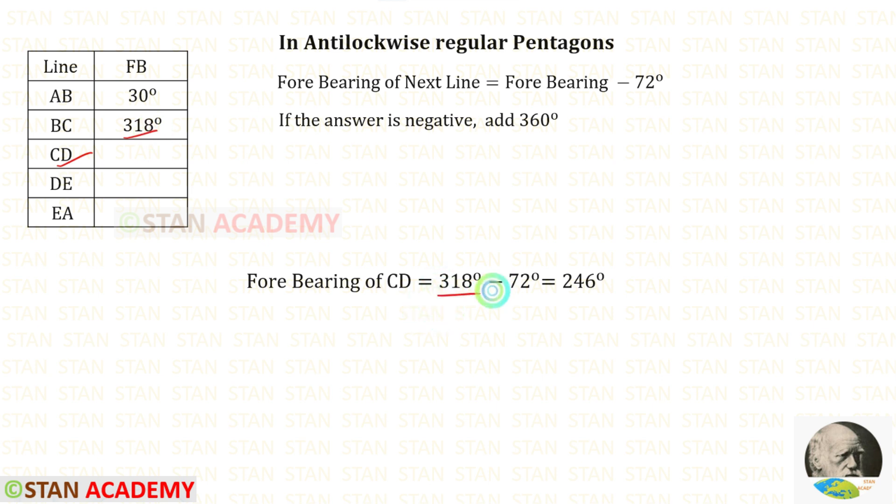318 degrees minus 72 degrees gives the forebearing of CD, which is 246 degrees. Now let us find the forebearing of DE. 246 degrees minus 72 degrees gives the forebearing of DE, which is 174 degrees.